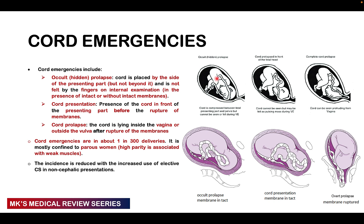Here is a pictorial image showing the occult or hidden prolapse. As you can see, the cord is right next to the presenting part but not beyond it, and it cannot be felt on vaginal examination. The membranes are still intact. With cord presentation, the cord is in front of the presenting part before the membranes actually rupture. The membranes are intact, so you can feel the cord in front of the presenting part on vaginal examination but you cannot see it. Sometimes it may be pulsating, sometimes it won't.